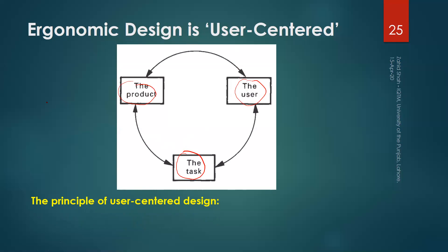We will use the characteristics of the users, the characteristics of the task, and the product, workplace, or information through which that task will be performed. You can see the arrows are two-headed, so you have to consider these three aspects and eventually design the product or whatever you are going to design.